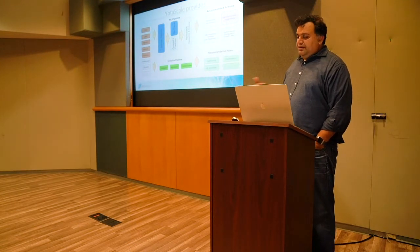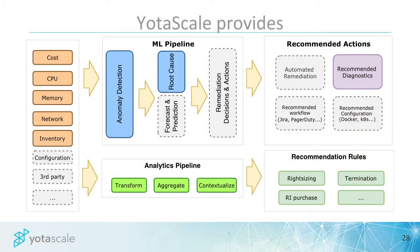Ultimately, we want to do automated remediation — that's the vision. In the meantime, having a recommended workflow or configuration coming out, whether it's Docker or Kubernetes, should all be generated from the ML pipeline. We also have an analytics pipeline — a pretty rich analytics platform underneath. You can slice and dice the data and get recommendations to optimize. You can do right-sizing, such as identifying you're over-provisioned on a certain type of VM, or finding opportunities for Reserved Instance purchases — saving money because you've been running sustained usage and can get a 30% discount by reserving an instance. Or identifying a cluster that's underutilized at 10% capacity that you should probably shut down. There's a whole set of recommendations that come with it.